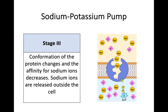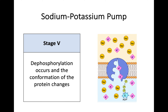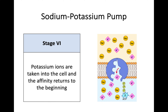Once the three sodium ions have been released, the two potassium ions bind outside the cell. There's another conformational change as the pump returns to its state ready for potassium. Then dephosphorylation occurs — the protein changes conformation back to its original shape — and in doing so, it releases the potassium ions into the cell. The affinity resets and this process can keep going.